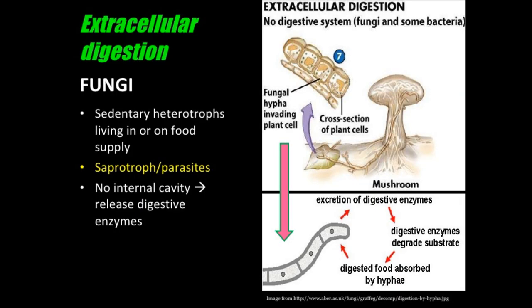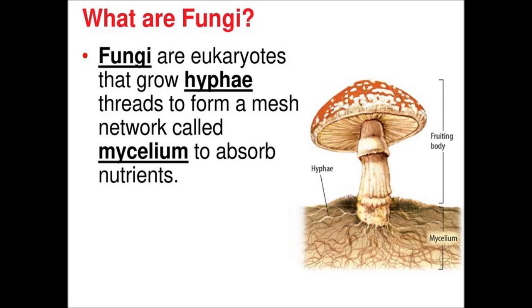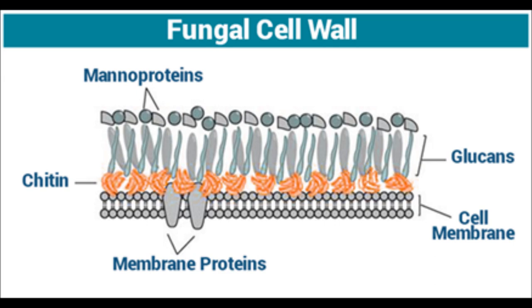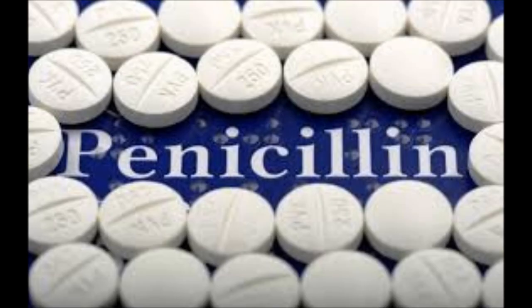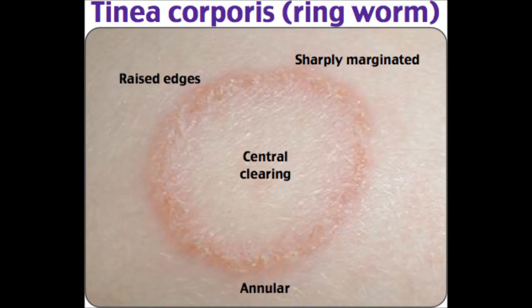They act as decomposers. Their bodies consist of long slender thread-like structures called hyphae. The network of hyphae is known as mycelium. They appear plant-like as they have a cell wall made up of chitin, a complex carbohydrate. Most of them are multicellular, except yeast. Some fungi are used in the preparation of antibiotics. For example, the common antibiotic penicillin is obtained from the fungus Penicillium notatum. Some fungi are very useful and some are pathogenic. Diseases like ringworm or athlete's foot are caused by fungi.